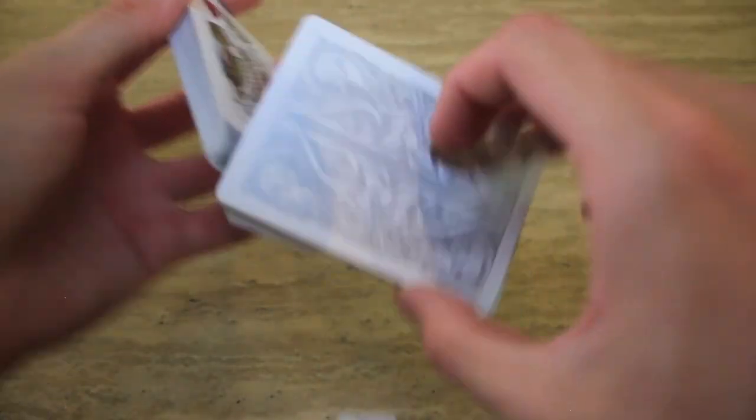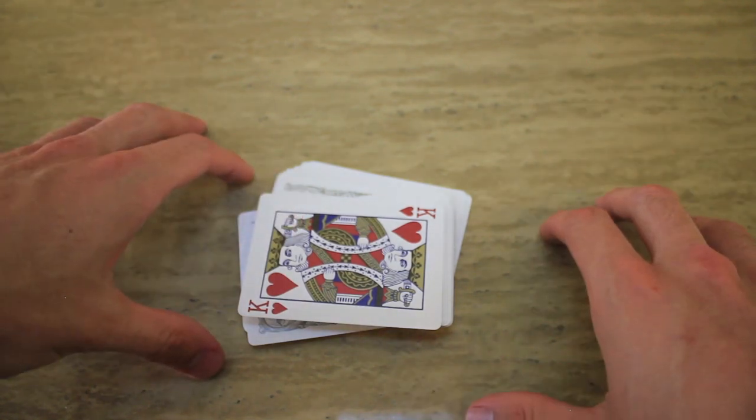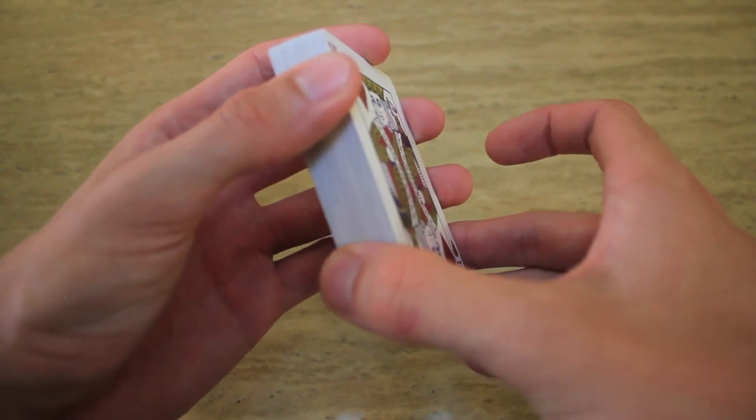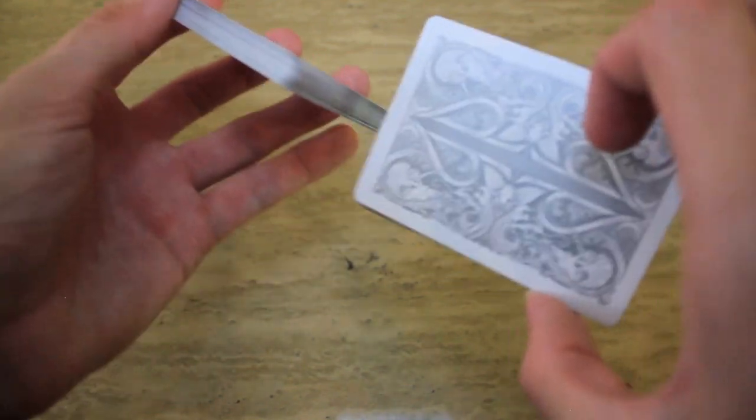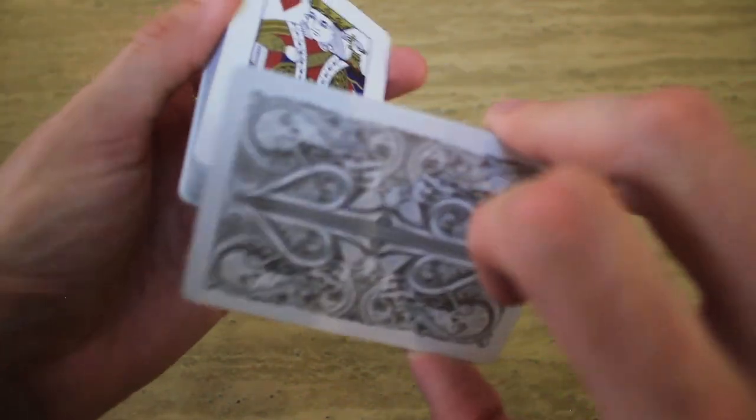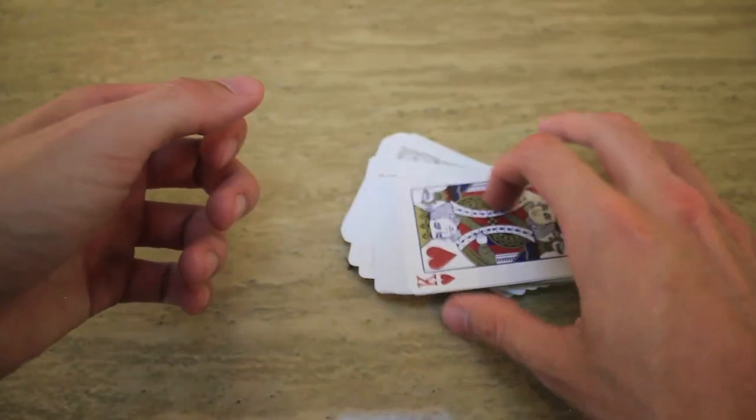It's definitely something where the faster you do it, the more it creates the illusion. Follow me along perfectly verbatim. Strip out half of the deck, do this little side perpendicular square up motion, cards under curl, goes down, goes down.